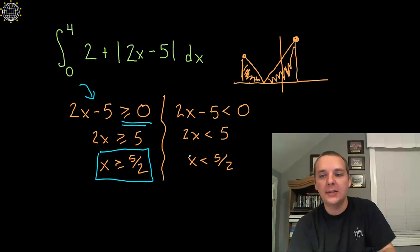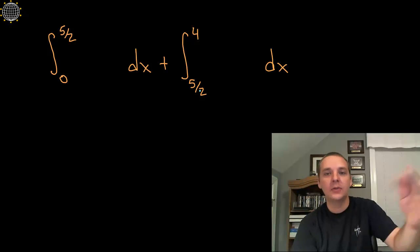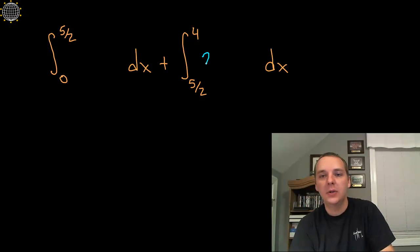So this tells me past 5 halves, my integrand, namely on this interval here from 5 halves the rest of the way, is just going to be 2x minus 5.